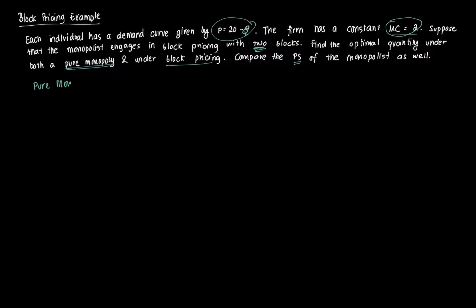So let's start with the pure monopoly case. A pure monopoly determines its output and price by equating MR equal to MC — that's its first-order condition. We get MR by taking the derivative of revenue with respect to Q.